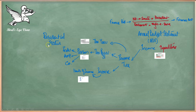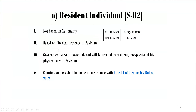Residential status is also important to determine. It is covered in Section 82 and is not based on nationality. If an individual stays in Pakistan for 183 days or more, they will be considered a resident of Pakistan, regardless of their nationality. However, if a government servant is posted outside Pakistan, they will still be considered a resident of Pakistan irrespective of their physical presence.